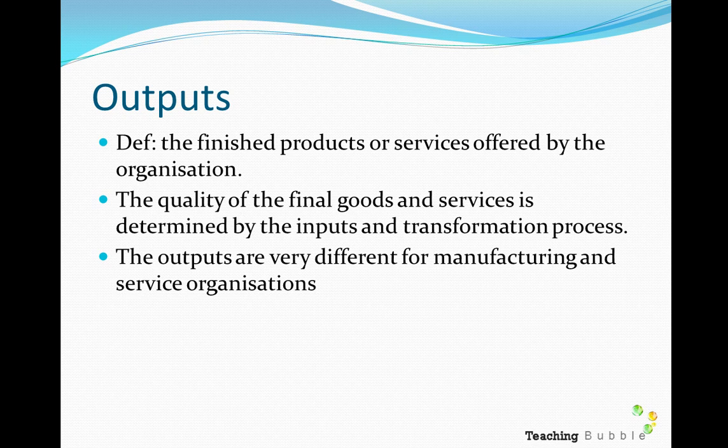The quality of the final goods or services is determined by two things: the inputs — the quality of the people, materials, facilities, and finance — and the quality of the actual processes used to transform those inputs. Any kind of process used to transform inputs into outputs affects the final result. As mentioned in an earlier video, the outputs differ for manufacturing and service organizations.